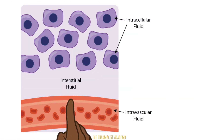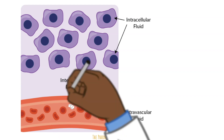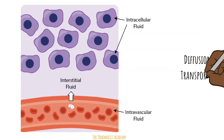So now we have the medication at the cellular level. It's in the blood vessel being carried by the blood. When it gets to the site of action, it's going to cross from the blood vessel into the interstitial fluid, and then move into the cells to do whatever it's supposed to do there. Diffusion and the use of transporters definitely play a huge role at this stage.